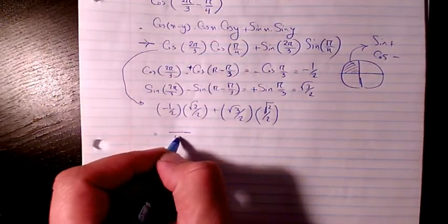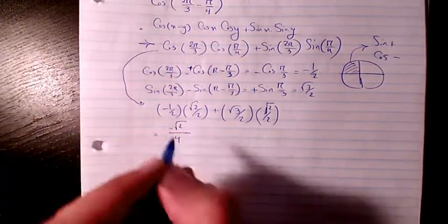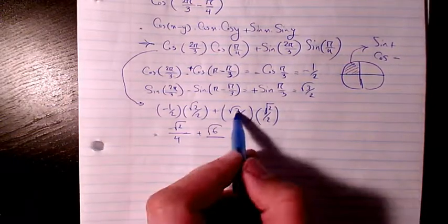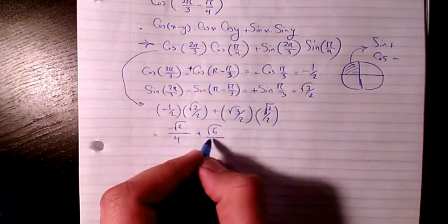So it's going to be... The first one is going to be negative root 2. Plus root 6. Because 2 times 3 is going to be root 6.